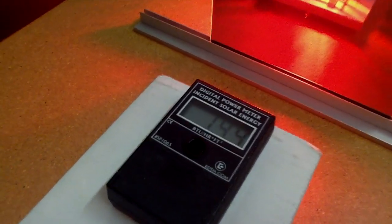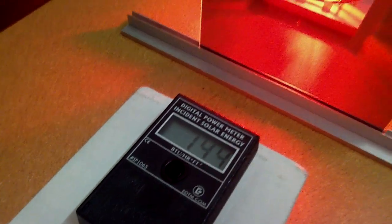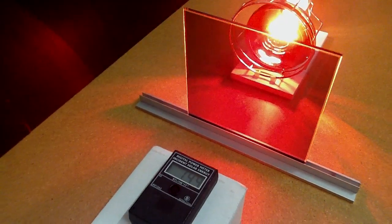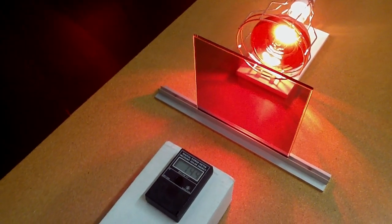The BTU meter is showing approximately 144 in comparison to the 295 with no glass. This proves our Alpine series window film reduces a large amount of heat.